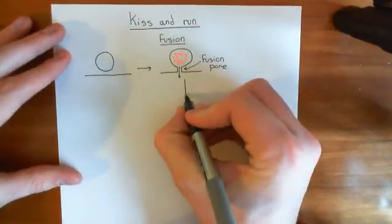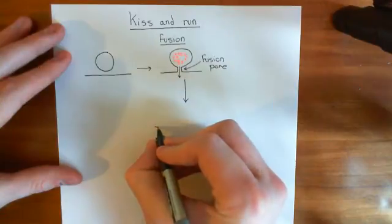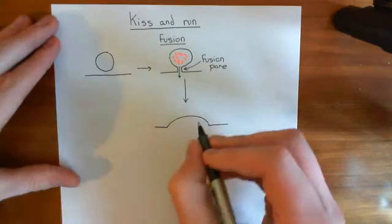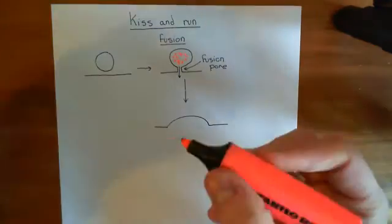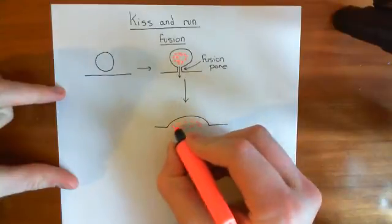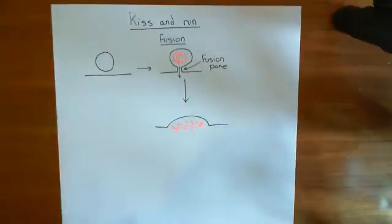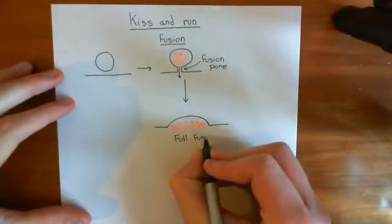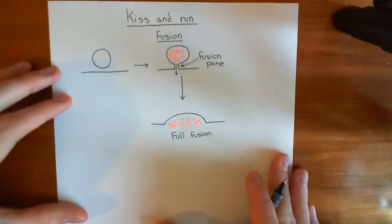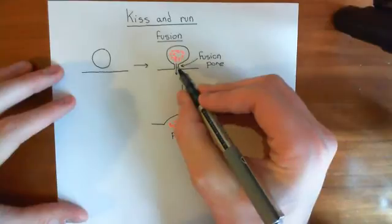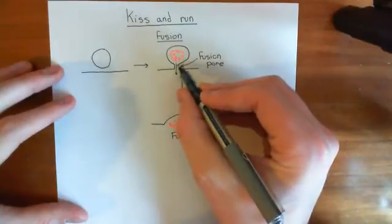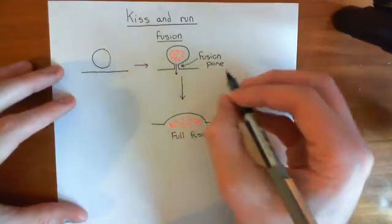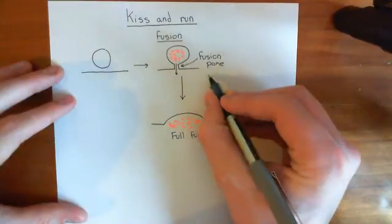What can then happen is you can either go on to full fusion — i.e. the entire vesicle membrane fuses with the presynaptic membrane and dumps the neurotransmitter contents into the synaptic cleft — that's full fusion. Or, what can happen is a phenomenon known as kiss-and-run, where the fusion pore forms for a little while and some lipid in the synaptic vesicle moves into the presynaptic membrane, but then the fusion pore closes again.